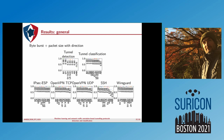Now we have the results for our three sub-objectives: tunnel classification, tunnel detection, and on the bottom, application classification inside the tunnel, using both byte burst and packet size with direction. Tunnel classification performance is very good. Tunnel detection and application classification inside tunnel results are a bit worse. Some tunnels are more difficult to analyze than others — application classification inside SSH is more difficult than inside IPSec, for example, and OpenVPN TCP and UDP seem to be more difficult than IPSec and WireGuard.